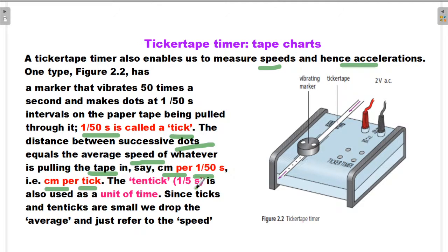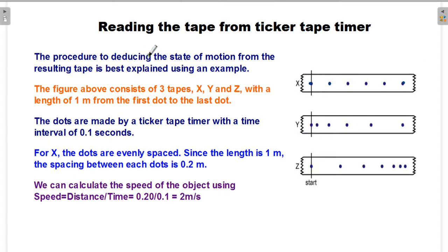Ten ticks, which is 1/5 second, is called a ten-tick. Ten-tick is used as a unit of time. The procedure for deducing the state of motion from the resulting tape is best explained using an example.